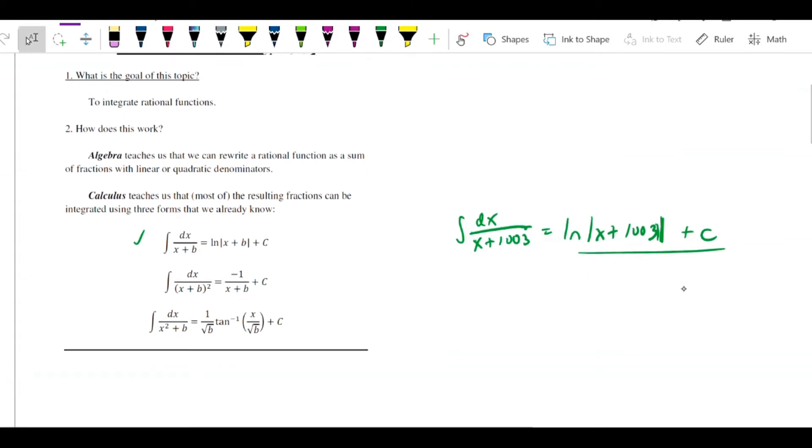Similarly, with a little bit more work, you could discover that the antiderivative of 1 over quantity x plus 93 squared is equal to negative 1 over x plus 93 plus c.